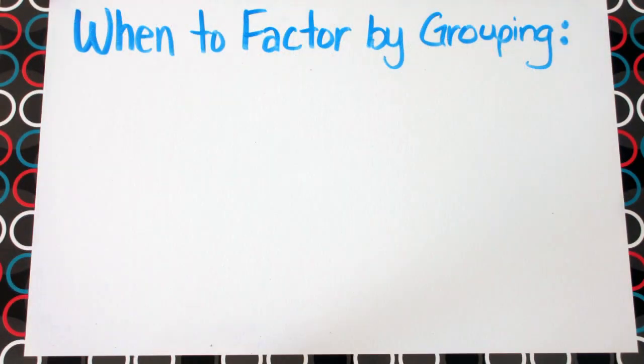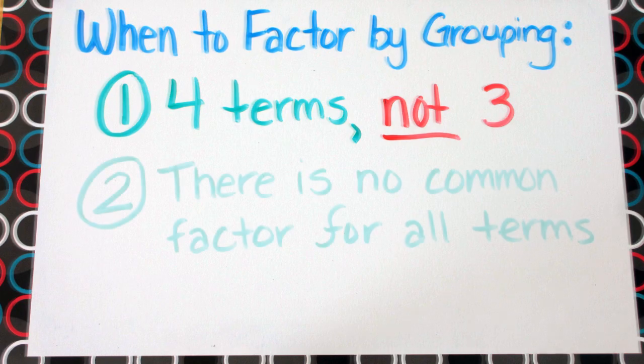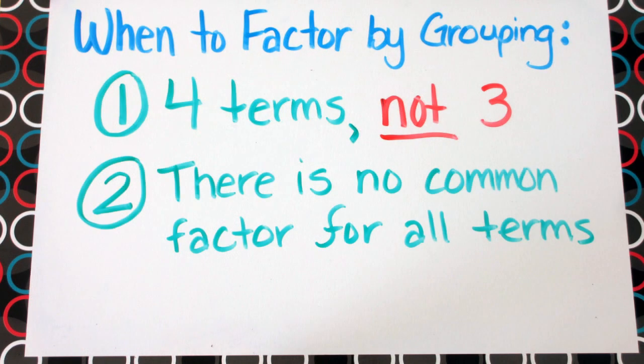So now that you've seen two examples, it's important to know when you should use factoring by grouping. The first hint is that you have four terms, not three. The next thing to look out for is common factors. There will be no common factor between all terms.